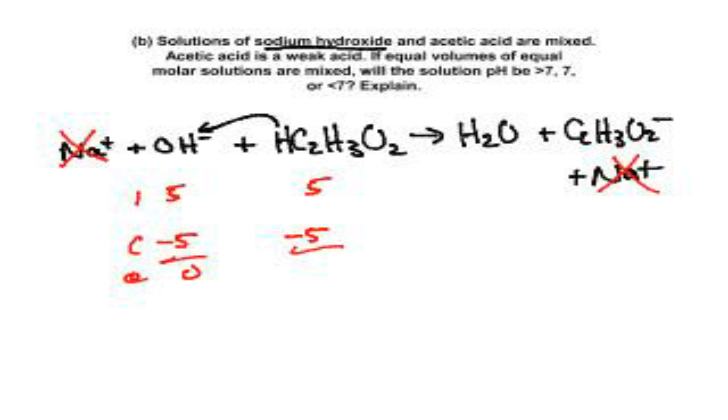The second portion asks: if you have equal volumes of equal molar solutions mixed, will the pH be 7, greater than 7, or less than 7? If you have 5 millimoles of this and 5 of this, you'll have some acetate ion left over. Acetate is the anion of a weak acid, and the anion of a weak acid is always a base, so its pH will be greater than 7 because the acetate ion is basic.